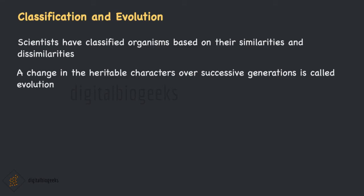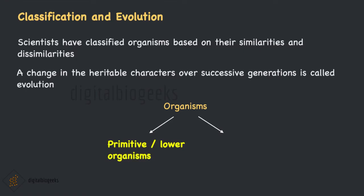When we connect this idea of evolution to classification, we find some groups of organisms which have ancient body designs and have not changed much from their very simple type. These organisms are referred to as primitive organisms or lower organisms. But some organisms have acquired their body designs recently. These are called advanced or higher organisms, as some changes have occurred in their body designs to adapt to new or extreme environments. In other words, some are older organisms and some are younger organisms. Older organisms are simpler compared to the complex younger organisms.